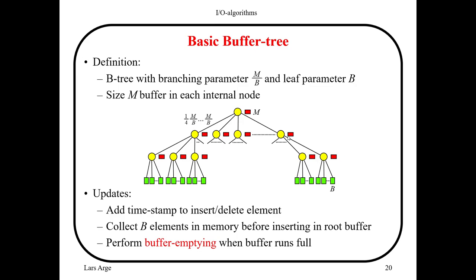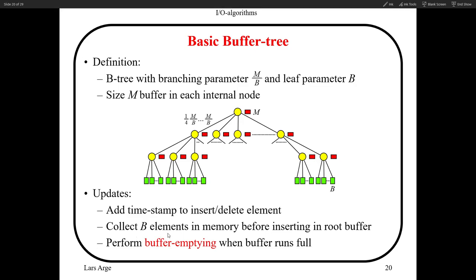Alright, so what happened to the updates? So when the updates come, we collect B elements in the internal memory before doing anything. So in other words, we keep B elements, the most recent B updates, in the internal memory. And on top of that, whenever updates come, we also add a timestamp. So this timestamp is to make sure that we get the order of the updates correctly. Because remember that the updates will replace in the buffers. We're not going to process every update immediately. We're going to process them later on. So we're going to accumulate all the updates.